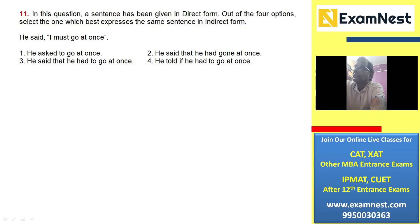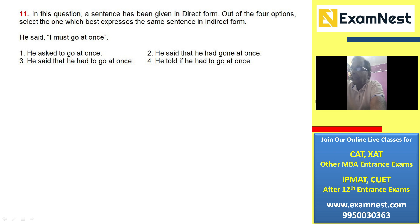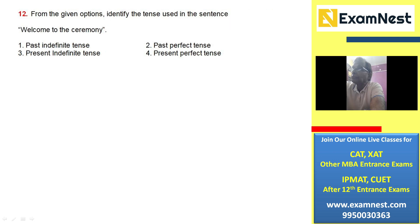In this question, a sentence has been given in direct form. Look at these sentences: 'He said I must go at once.' Now what is the correct indirect form here? The correct one is number three: 'He said that he had to go at once.' The others are incorrect.